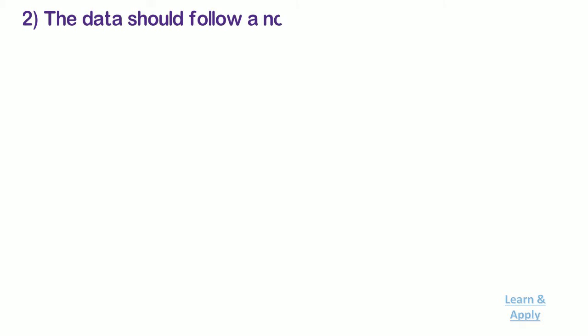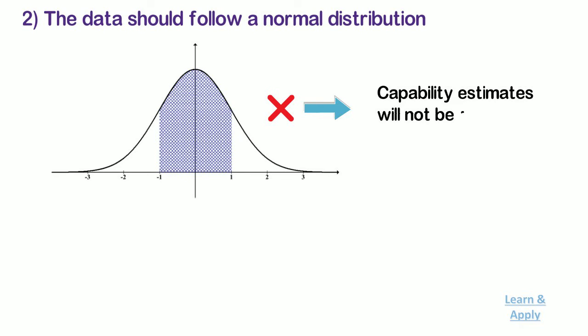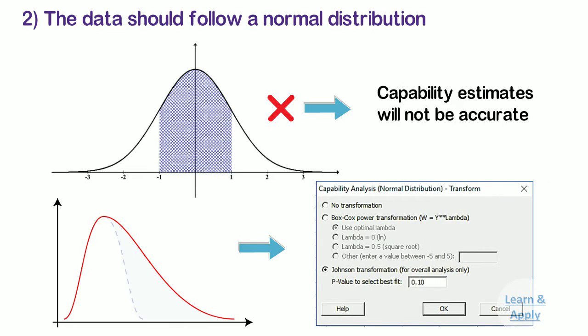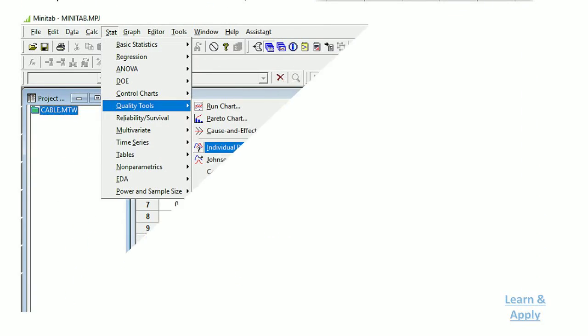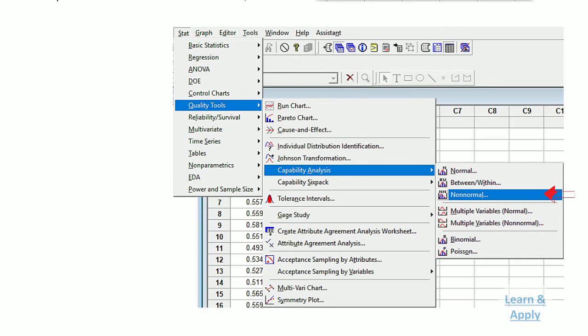Second, the data should follow a normal distribution. The process capability estimates for these analyses are based on the normal distribution. If the data are not normally distributed, the capability estimates will not be accurate for your process. If your data is non-normal, you can transform them using the Box-Cox transformation or the Johnson transformation, which are included in the transform option of this analysis. To determine whether your data are normal or whether a transformation will be effective for non-normal data, use individual distribution identification. If your data are non-normal and a transformation is not effective, consider using non-normal capability analysis.